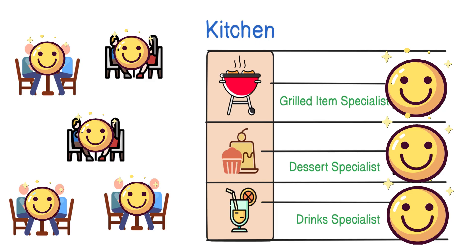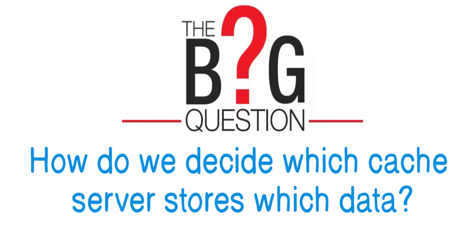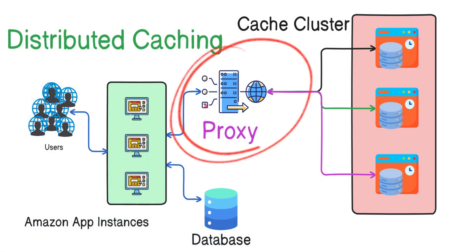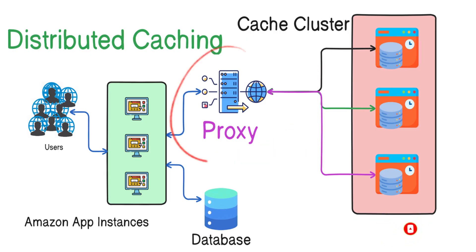Distributed caching works in a similar way. Instead of one central cache storing and serving all requests, multiple cache servers handle different pieces of data. When an application requests information, it gets routed to the appropriate cache server that holds that particular data. Now the big question is: how do we decide which cache server stores which data? There will be a component responsible for routing the request — it can be at the client side, cluster side, or a proxy in the middle. We need to understand on what basis the data will be divided.